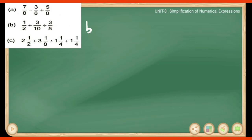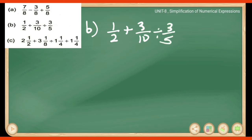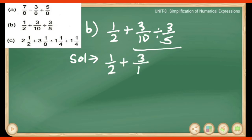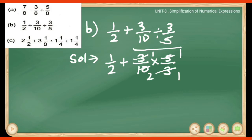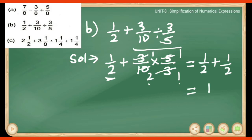Part B: 1/2 plus 3/10 divided by 3/5. According to the DMAS rule, we handle division first. The division sign between 3/10 and 3/5 — when we divide two fractions, the division sign converts to multiplication and 3/5 becomes 5/3. So 3/10 × 5/3 = 1/2. Now we have 1/2 plus 1/2, which equals 2/2 = 1.